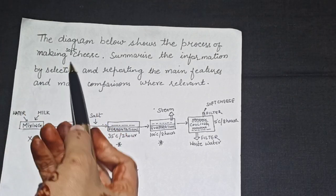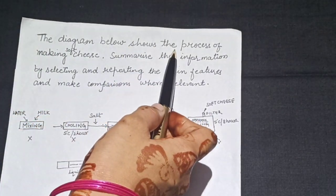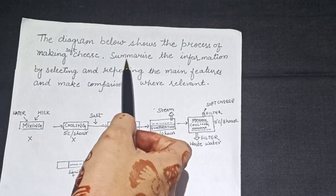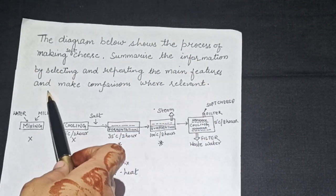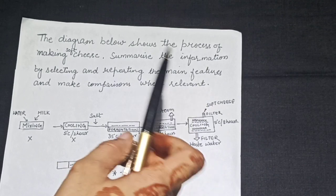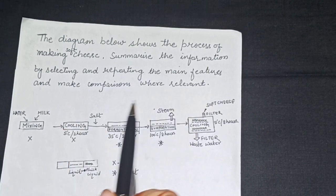Our question for today is the diagram below shows the process of making soft cheese. Summarize the information by selecting and reporting the main features and make the comparisons where relevant. Let's have a look at the diagram.